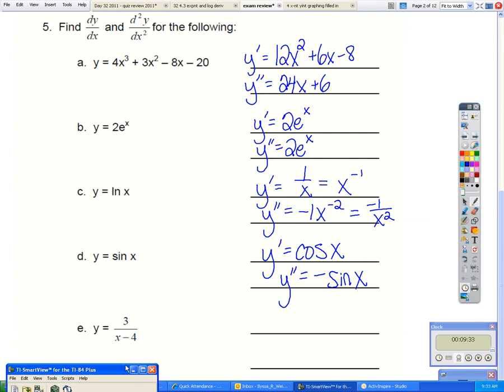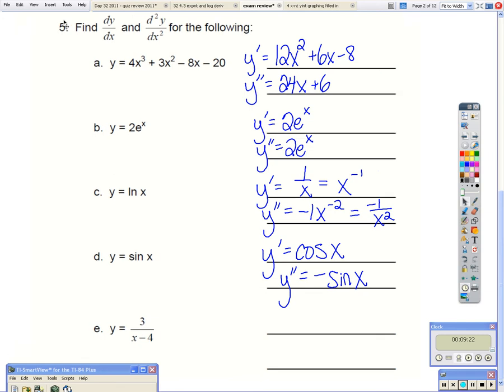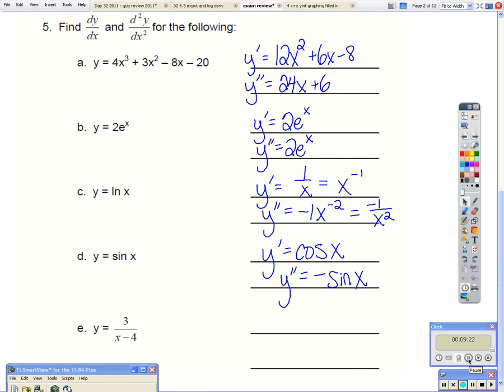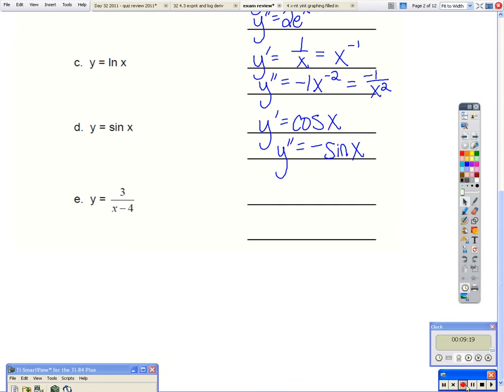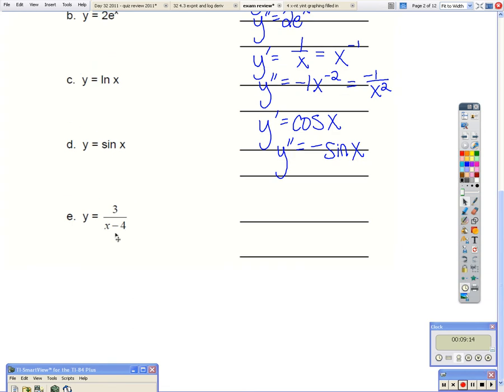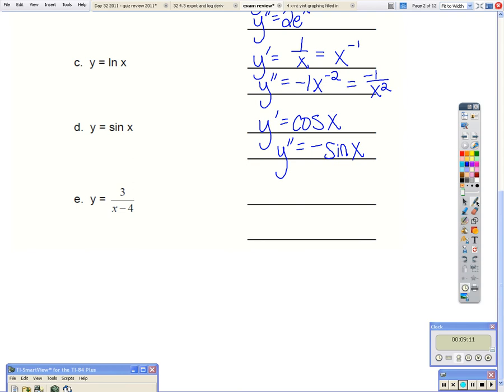For letter e, we're going to use the quotient rule. I'm going to need a little bit more space. So the top function, and if we look at our formula sheet, the formula sheet defines the top function as f of x. And the bottom function is g of x. So to help myself, I'm going to find the derivative of each piece here.